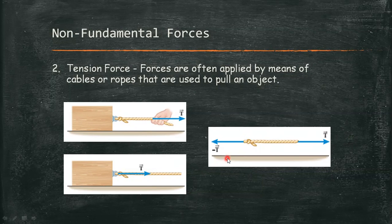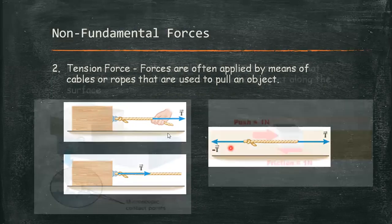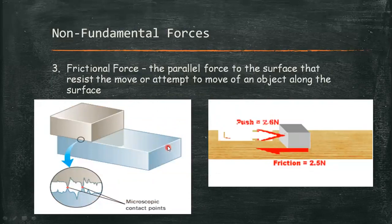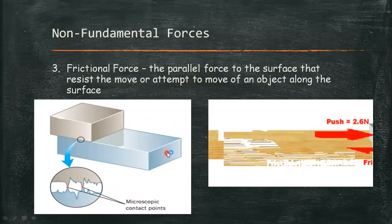In other words, a force of negative T acts at the left end of the rope, tending to pull it apart. The third non-fundamental force is frictional force.